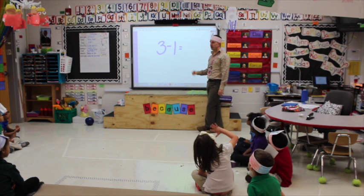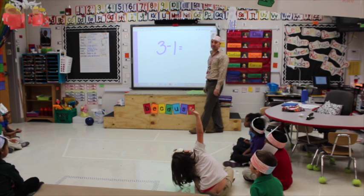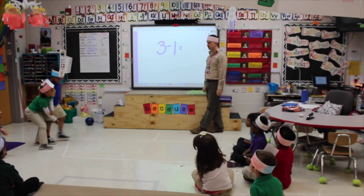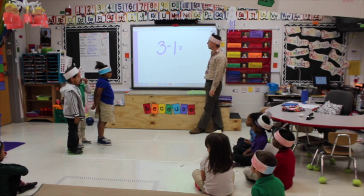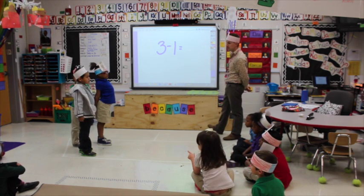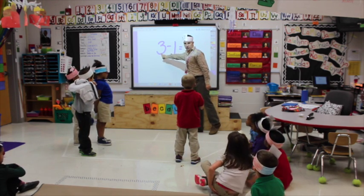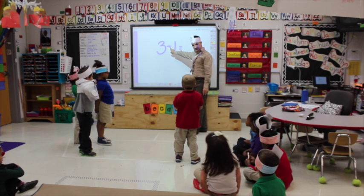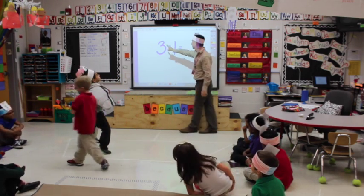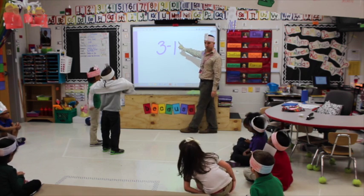Everybody read: three minus one equals... Romy, how many people are getting on my boat? Three. One, two, three. Three people got on the boat, Romie. How many are getting off the boat? One — bye, Leia. Romy, how many people are left on the boat? Two. Three minus one equals two.